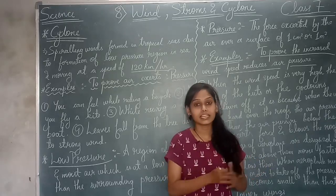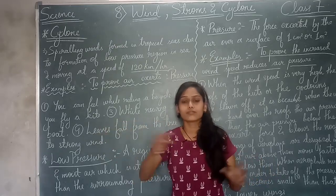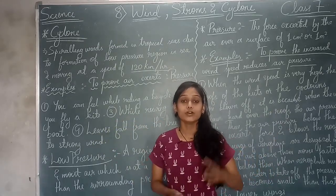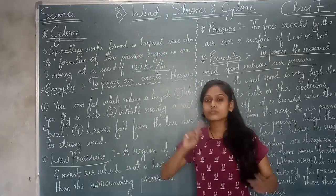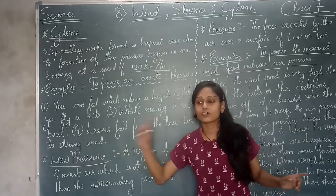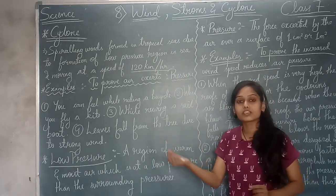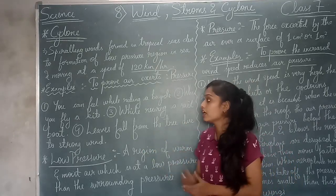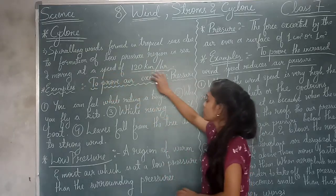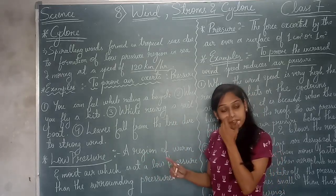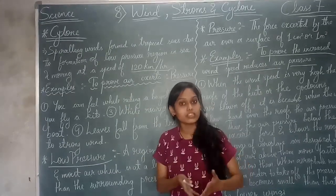We use the term cyclone for tropical wind. In a spiral form, if there is wind pressure through the water at 120 km per hour, with the spiral floating in the water, what do we call cyclone? The formation of a low pressure region in the sea, moving at the speed of 120 km per hour — we call that a cyclone.